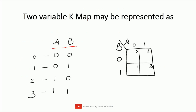Let us see how to draw a 2-variable K-map and how to assign the block numbers. First, let us write down a truth table having 2 variables A and B. As we know, we can only have 4 combinations with 2 variables. These are the decimal equivalents of 0, 1, 2, and 3. You need to draw a K-map representing 4 cells — a 2×2 matrix. One variable is A and the other is B. On this side, A can have only 2 options: either 0 or 1. Similarly, B can have only 2 options: either 0 or 1.